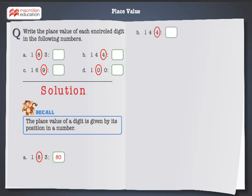Let's solve the next problem. Here the number 4 is at the ones place. Hence its place value is 4.